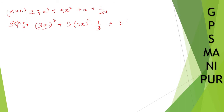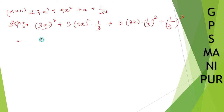Another term is thrice ab square, where a is 3x and b is 1/3. So (1/3) square is b square. Using the formula: a cube plus thrice a square b plus thrice ab square plus b cube — this is the formula for (a + b) whole cube. Putting in these values, you get the answer. That's all.